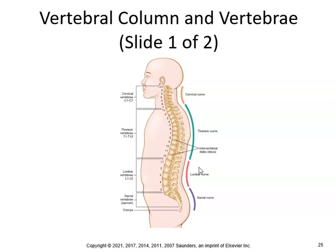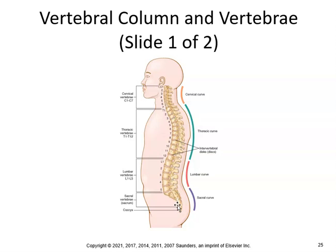The vertebral column has seven cervical, twelve thoracic, and five lumbar vertebrae. A helpful mnemonic: I eat breakfast at seven, lunch at twelve, and dinner at five. The spine has four curvatures — cervical, thoracic, lumbar, and sacral — going in, out, in, out.